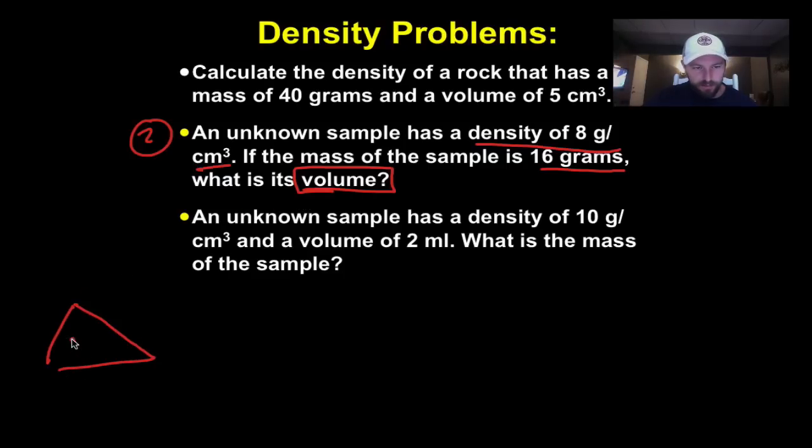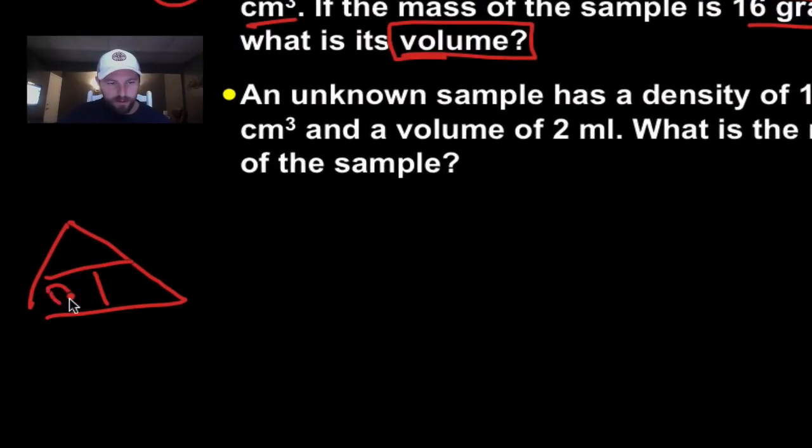So, let's start with the triangle. Density, mass, volume. And what we're going to do is we're going to cover up the thing that we're looking for. So, in this case, we're going to cover up the volume right here. So, volume equals our mass over our density. Mass over density.